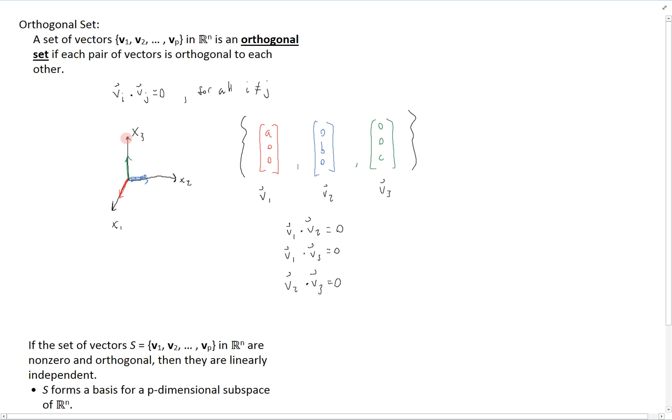This can be visualized in a space like R3 over here, where we can see that we cannot make the vector A00 out of a linear combination of 0B0 or 00C over here. And likewise for all of the other vectors, it's just not possible. This extends to all spaces and always works with a set of orthogonal vectors.